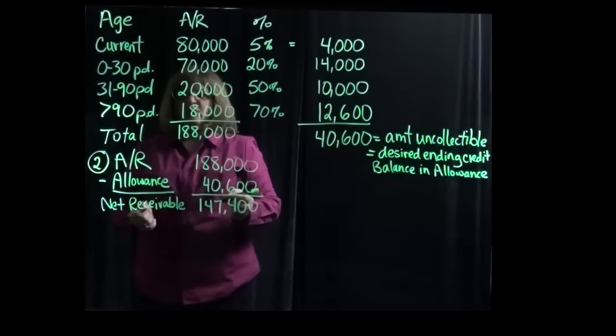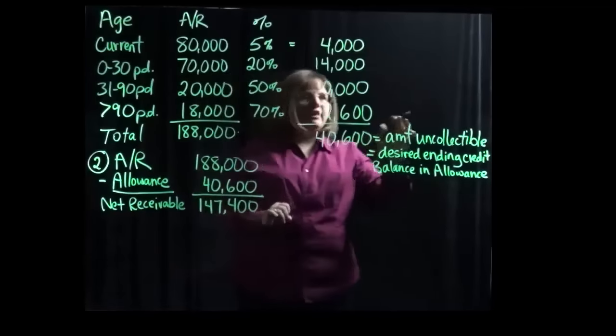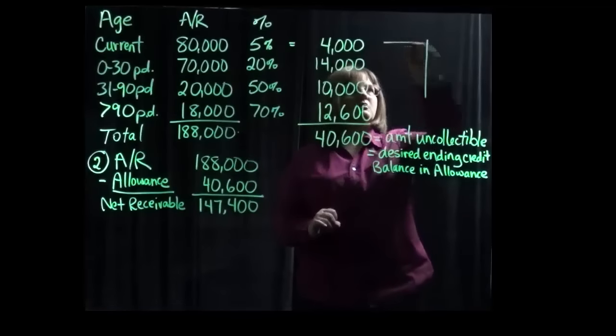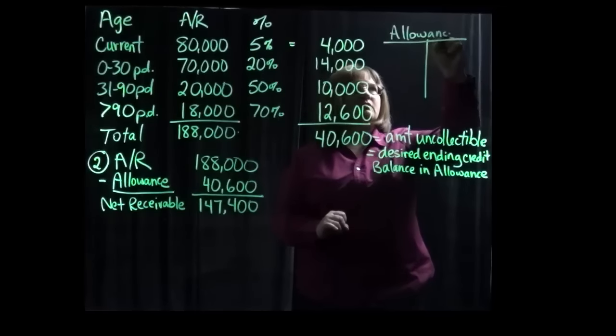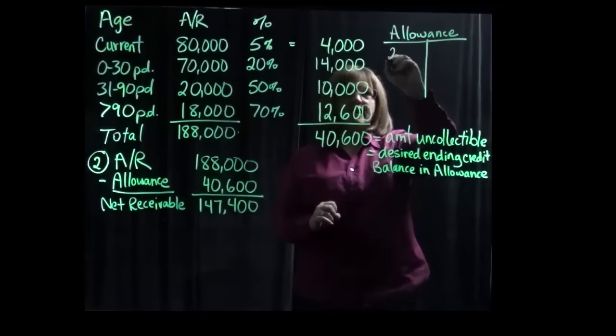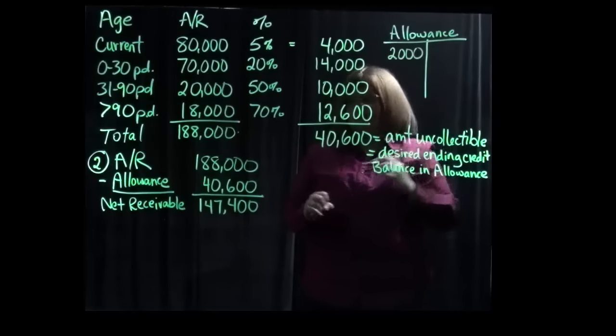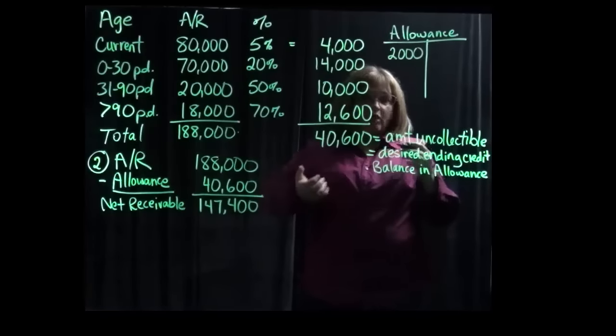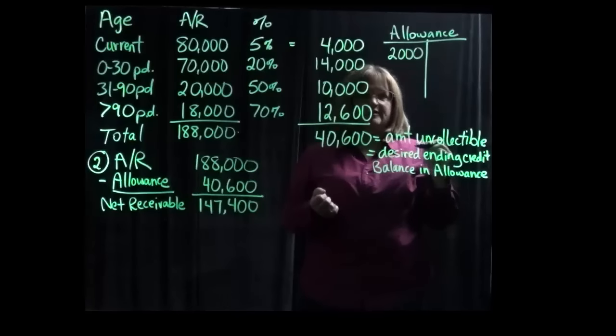Now part three asks us what journal entry we would need to make given that our allowance account currently has a $2,000 debit balance. And so part three is saying what journal entry do we need to make to record bad debts given that we have a $2,000 debit balance in the allowance.